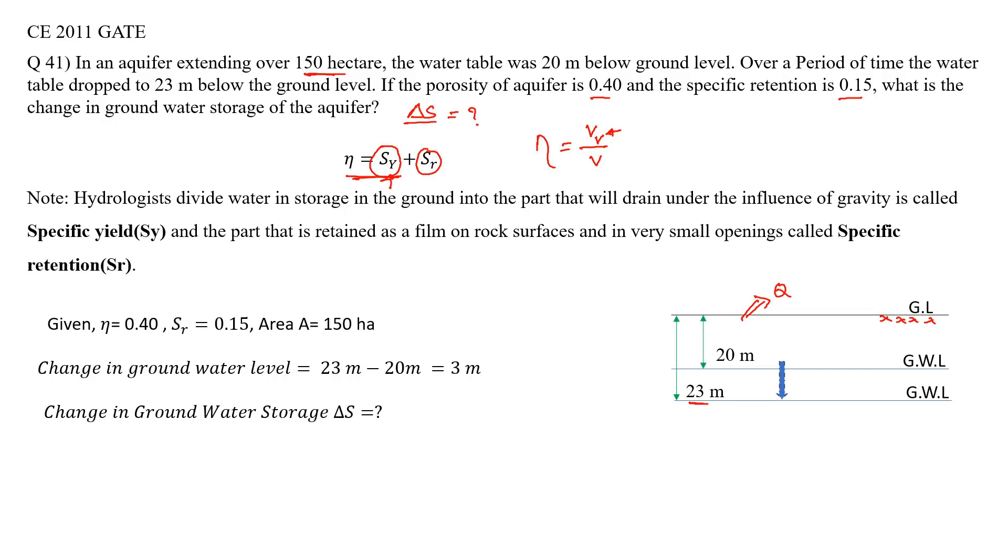Given data: porosity 0.4, specific retention 0.15 is the amount of water retained in the aquifer even after drainage or influence of gravity. Area is 150 hectares. The change in groundwater depth is 23 minus 20, which is 3 meters.